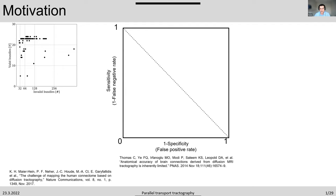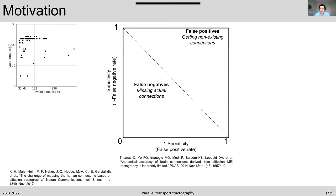Prior to this work, there were already concerns about the limitations of tractography. Thomas et al.'s work showed the limitations on the specific sensitivity axis. When we go towards one corner, we have false positives, meaning we are getting connections that do not exist. On the other side, we have false negatives, meaning we are missing actual connections.